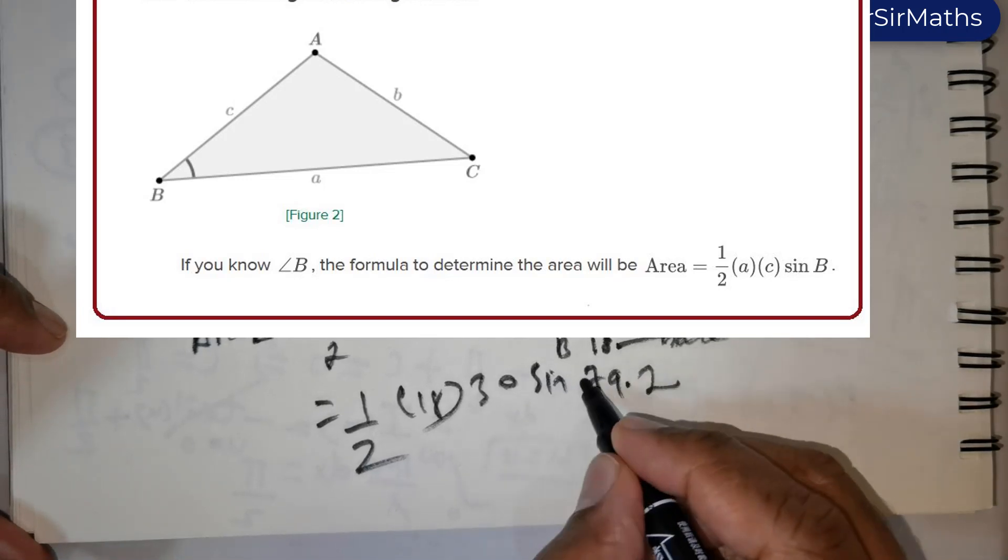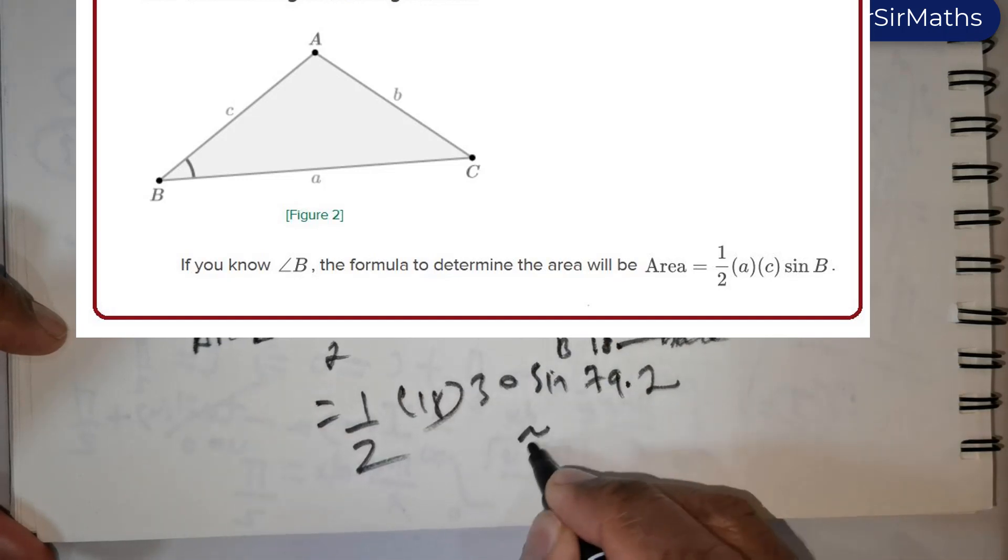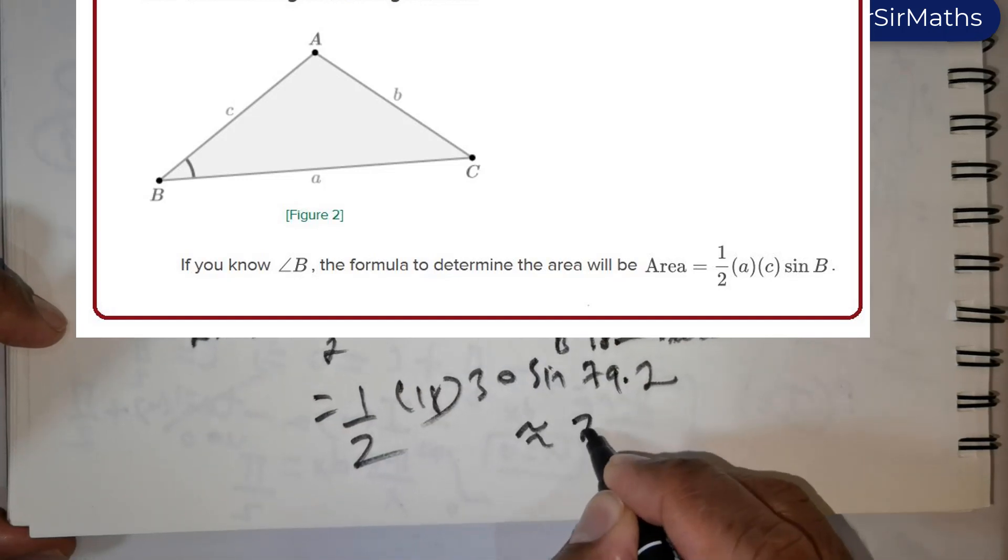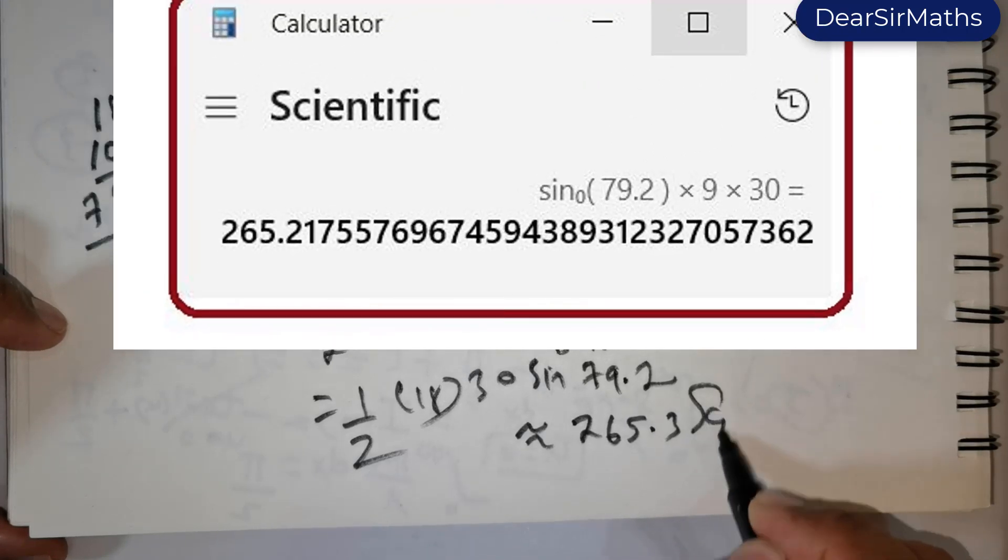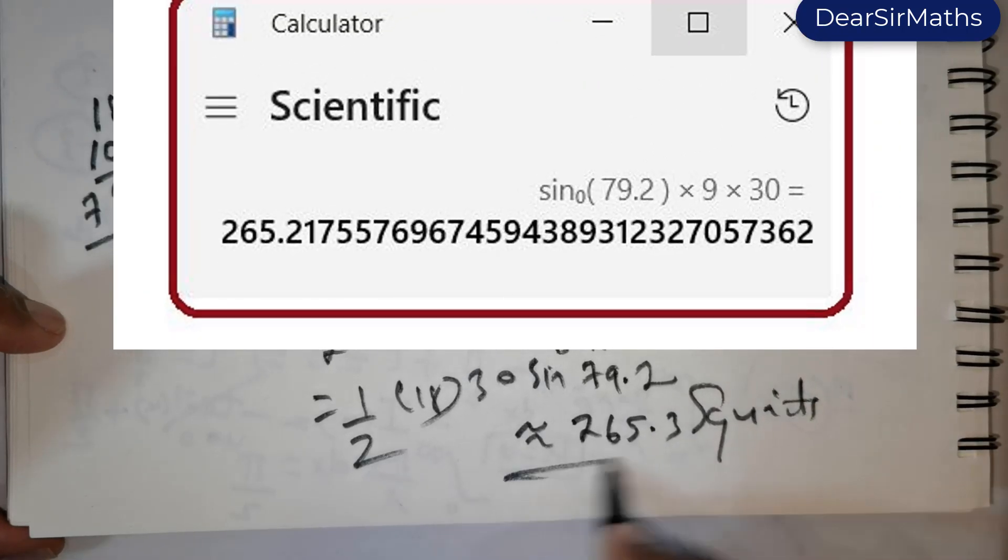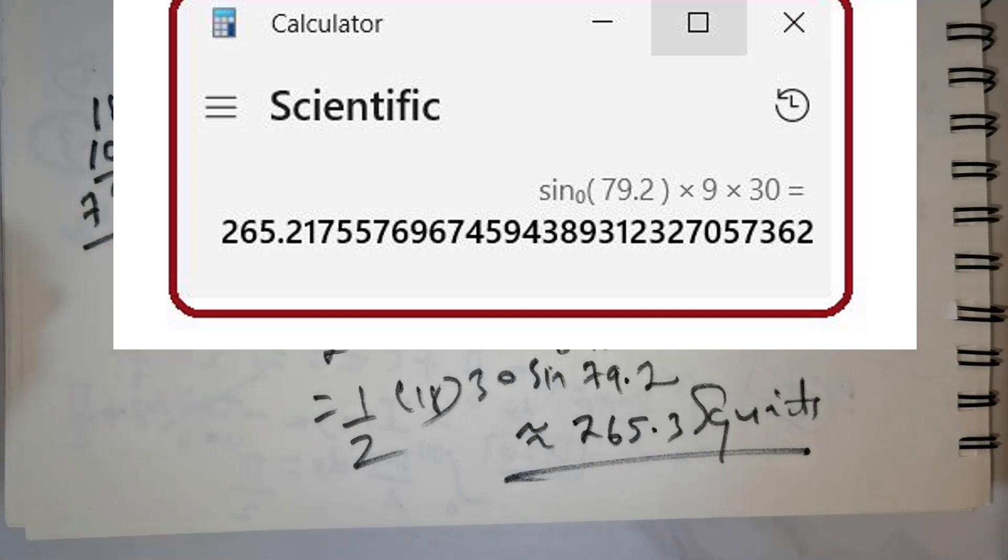So if you were to use your calculator and evaluate, this would approximately be equal to 265.3. Since we are dealing with area, you add the term square units. So that is the solution for this question.